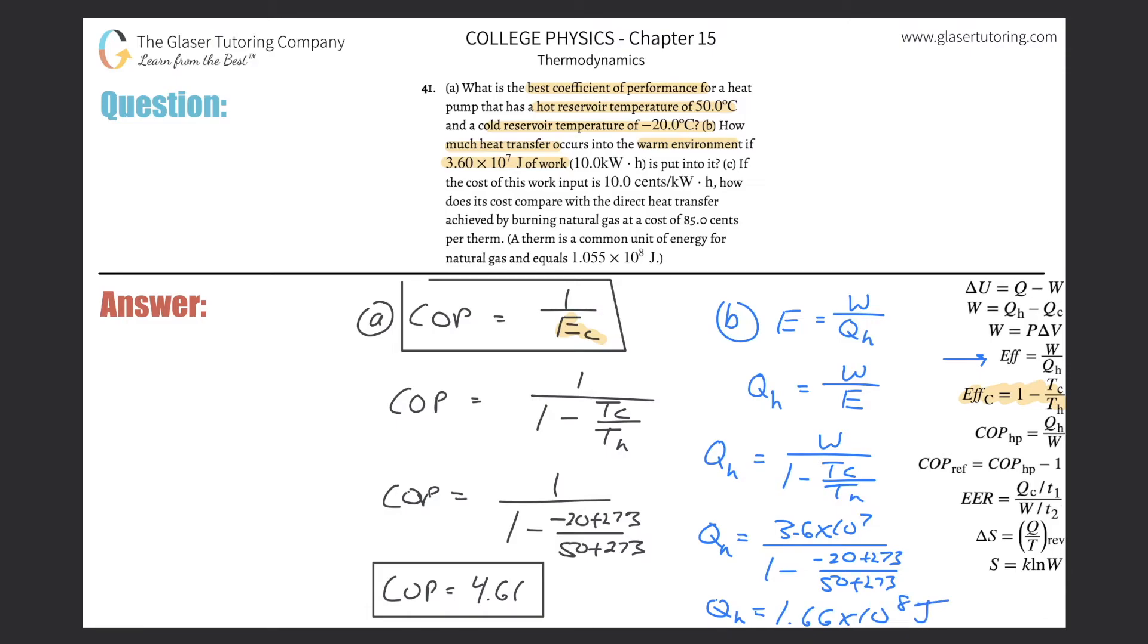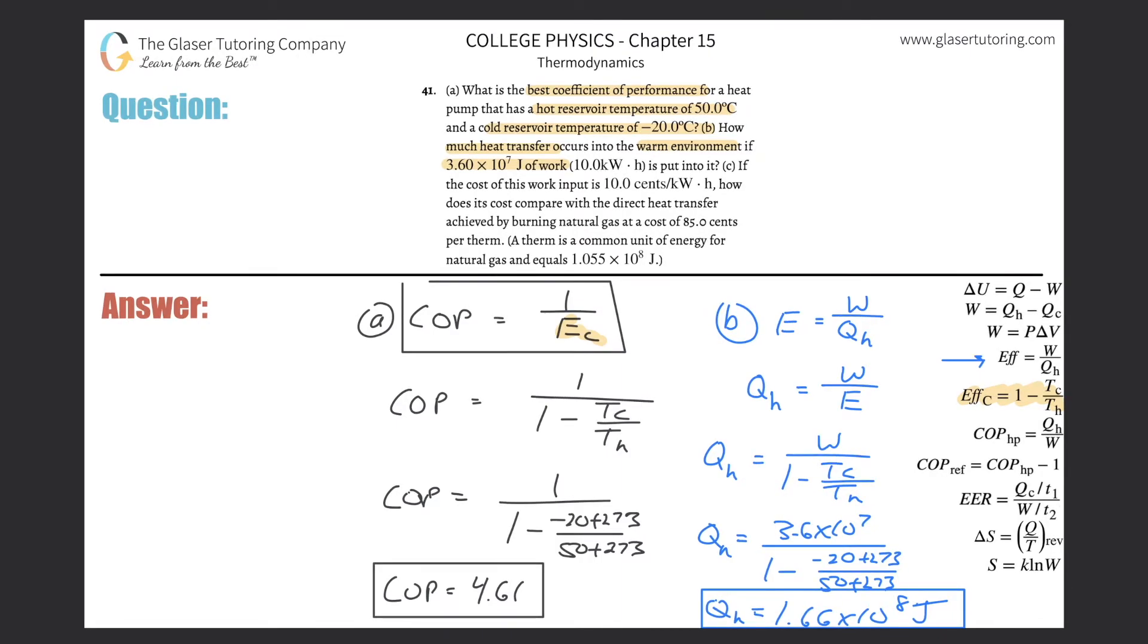Hopefully I read all those decimals right. And that's going to be now the heat transferred. Okay, so that takes care of letter B. All right, so letter C. If the cost of this work input is 10 cents per kilowatt hour, how does its cost compare with the direct heat transfer achieved by burning natural gas that costs 85 cents per therm? And they tell us what a therm is basically equal to here.